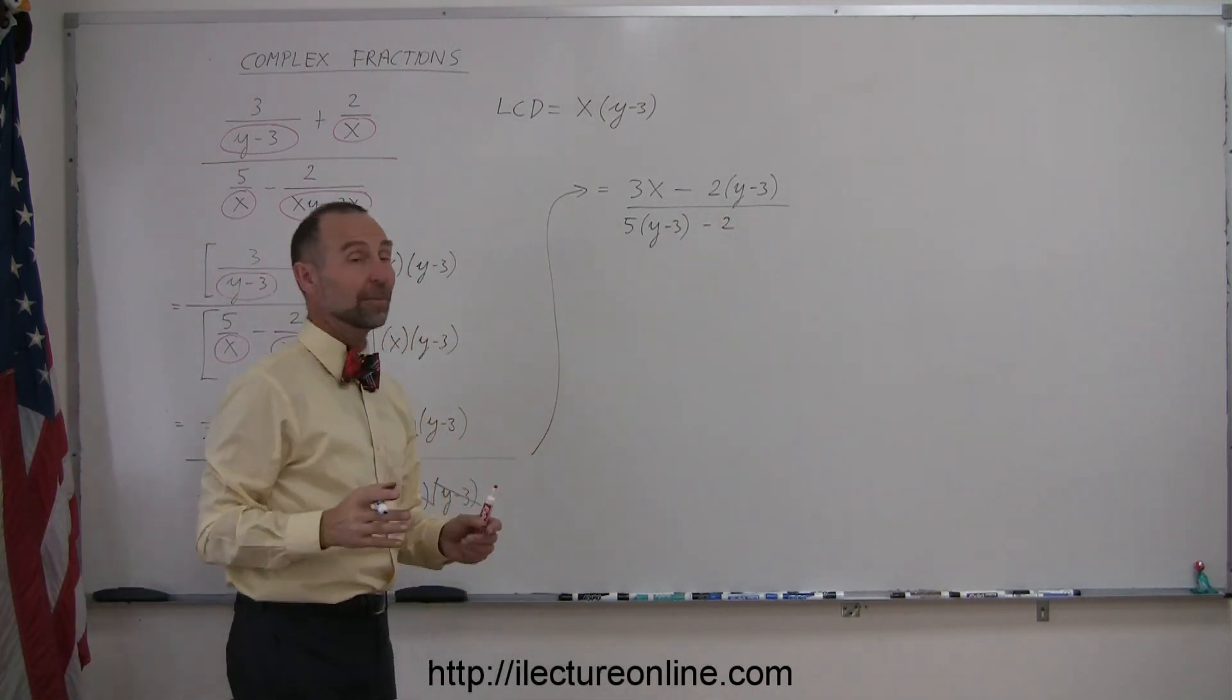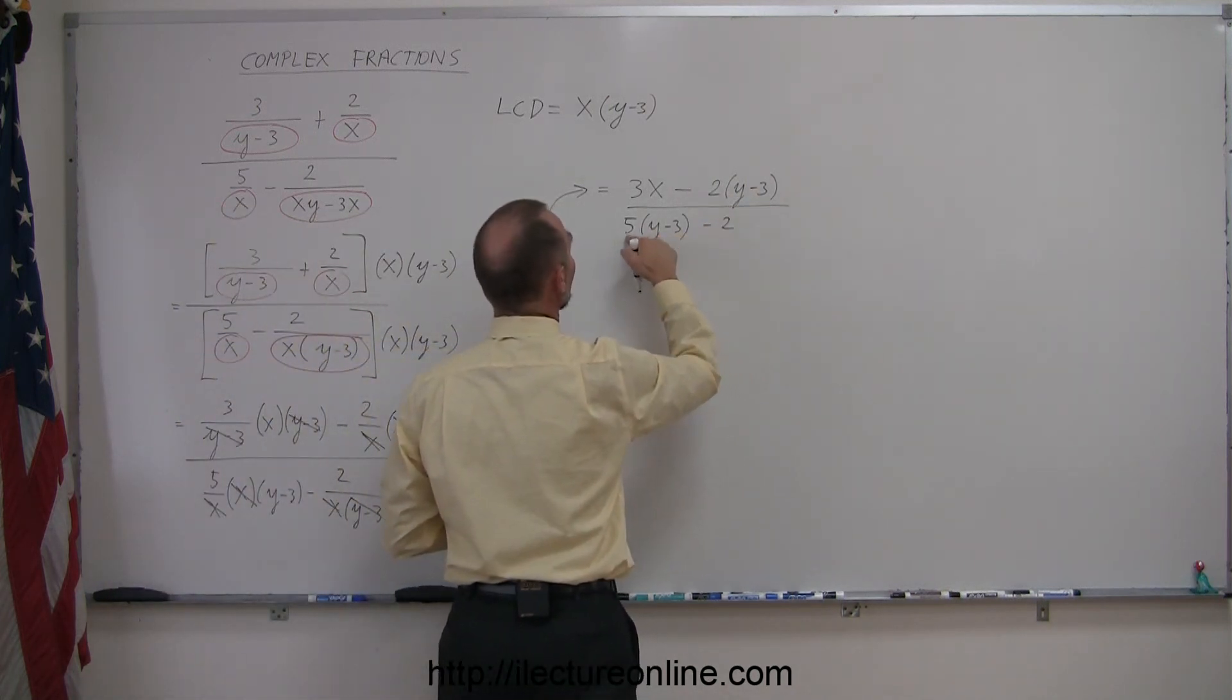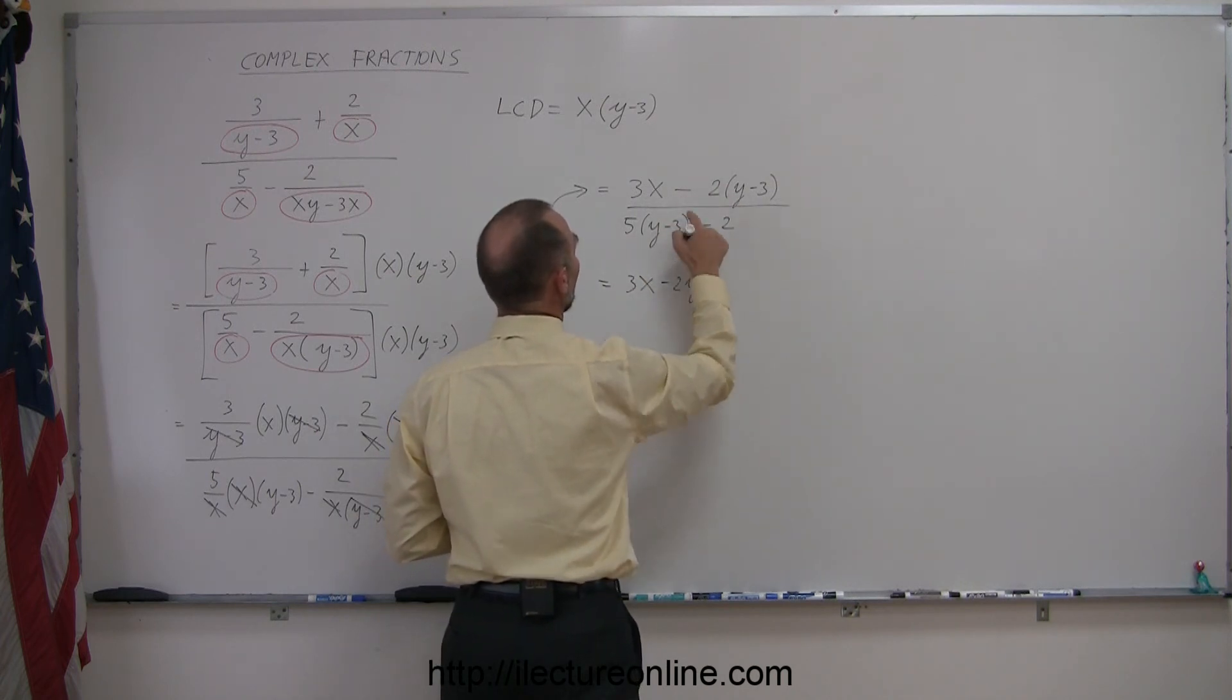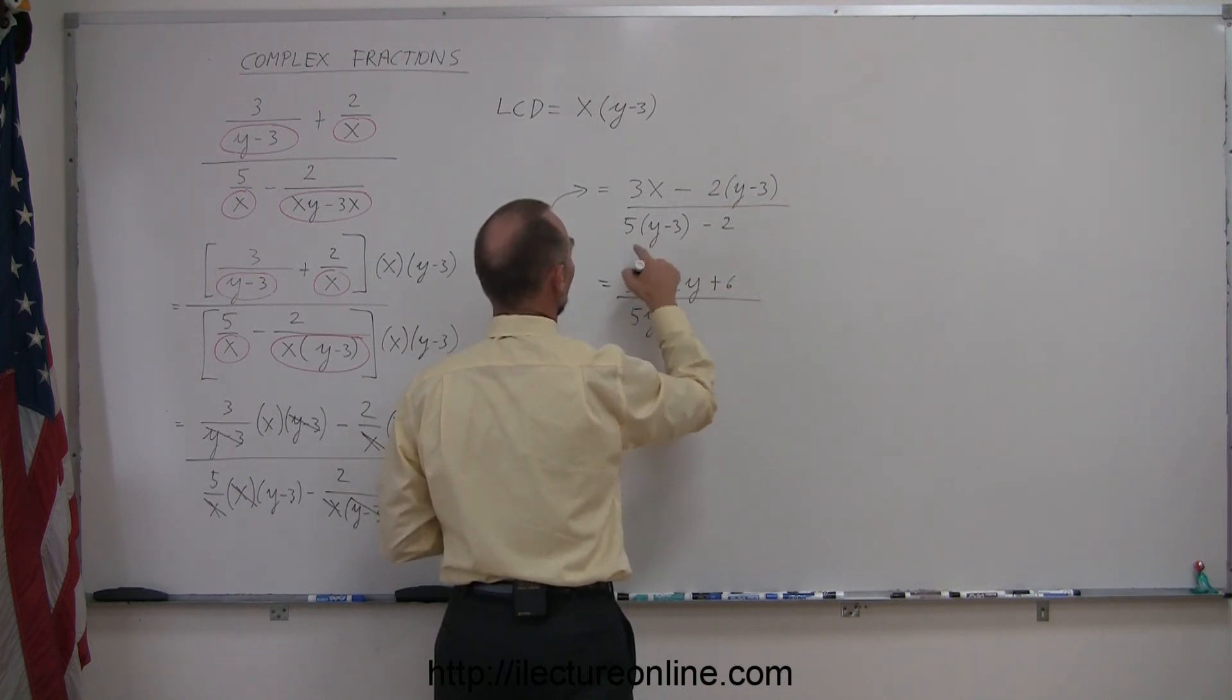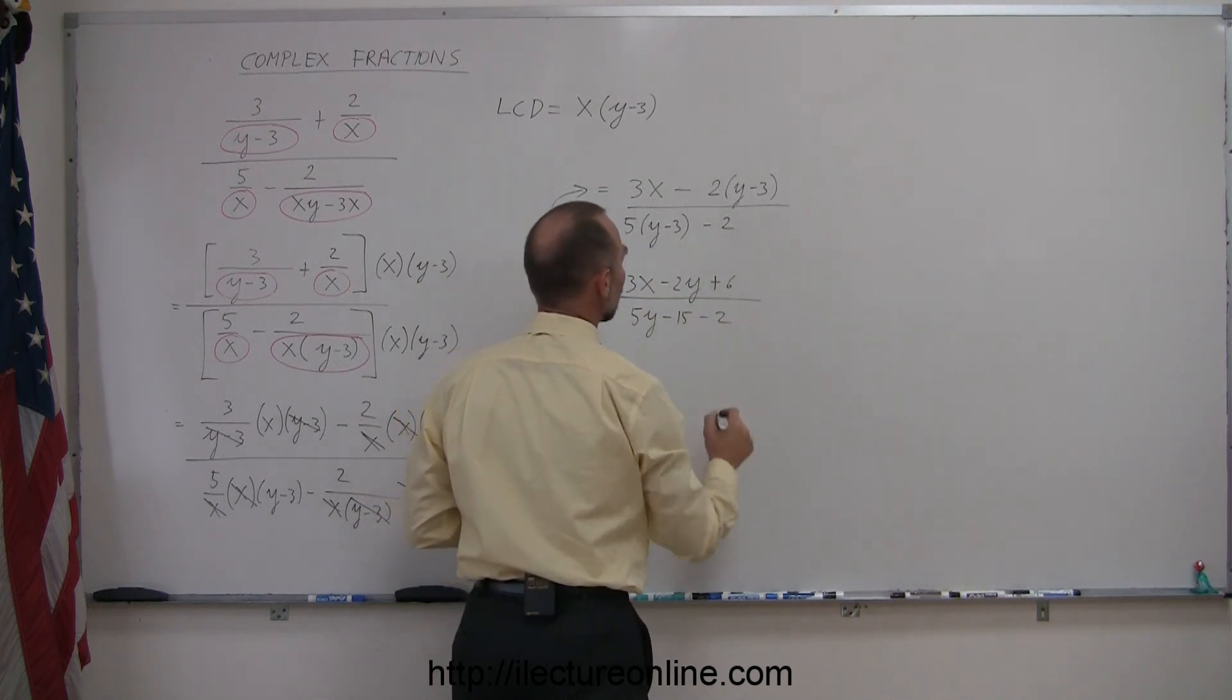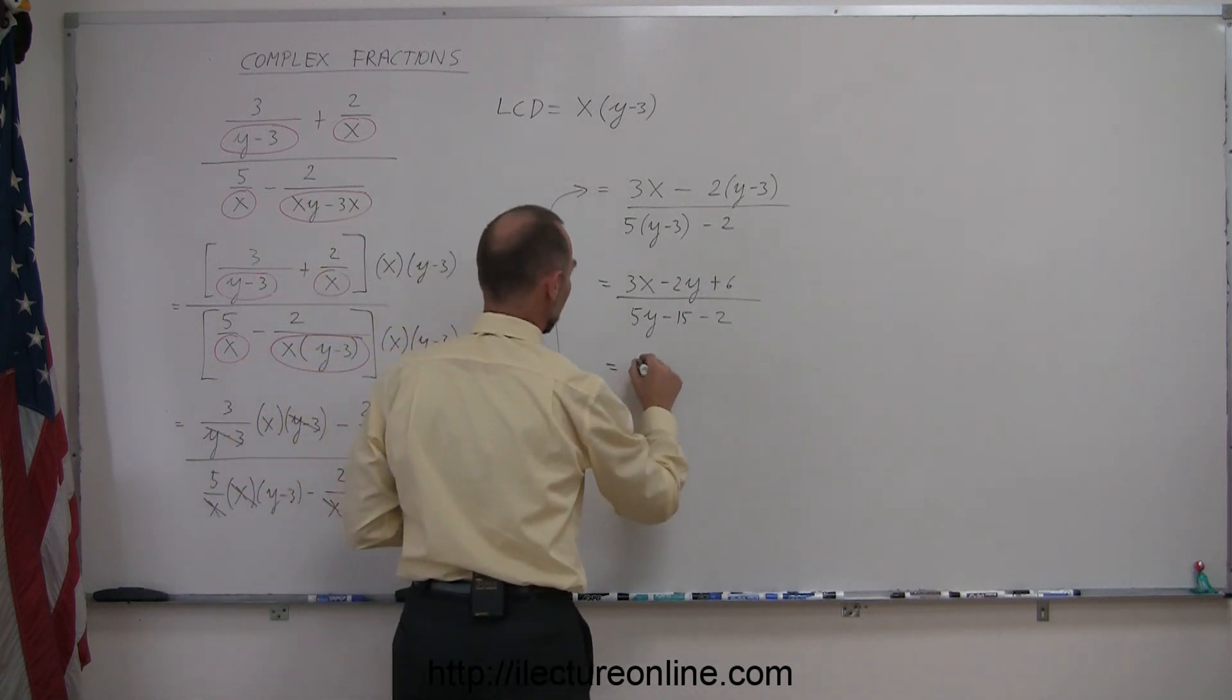And then I simplify by distributing the 2 with the (y minus 3) and the 5 with the (y minus 3). So this is 3x, minus 2 times y is minus 2y, minus 2 times minus 3 is plus 6. Over here I have 5 times y is 5y, 5 times negative 3 is minus 15, and I still have the minus 2. Then I collect common terms, so this is equal to 3x minus 2y plus 6,